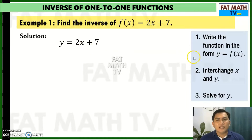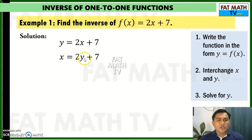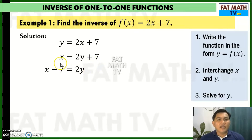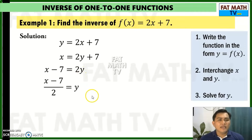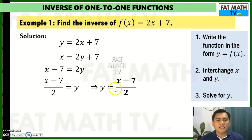The second step is we have to interchange x and y. So make this x and make this y, and you will have x equals 2y plus 7. And then solve for y — we need to isolate y. There's a 2 with y and a plus 7, so subtract 7 from both sides. You will have x minus 7 equals 2y, then divide both sides by 2. You will get x minus 7 over 2 equals y, or y equals x minus 7 over 2 by the symmetric property of equality.